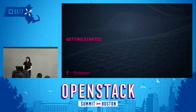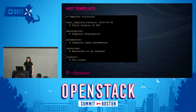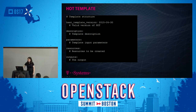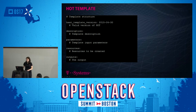Let's have a look at how to get started. The first important thing is to understand how the template looks like and what the important sections are. A template always has the same structure. The first is the template version, which needs to be a valid version described in the documentation — 2015 is something a little bit older, for example Ocata is 2017-02-24. The template version basically describes which features are available, which HOT template to use. With every release there will also be a new HOT template version, depending on what functions and features are available.